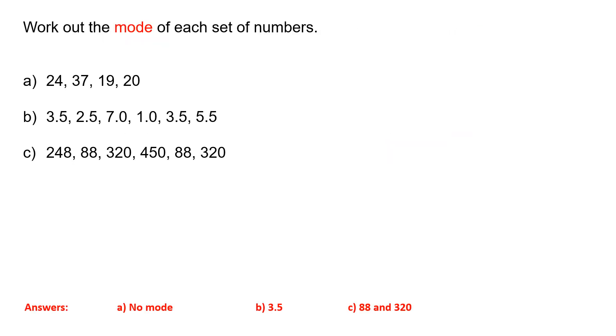Now I've put another three sets of numbers here for us to work with. I'm going to do the first set with you, but I'll leave B and C for you to do yourself. The answers are all at the bottom. Remember, we're working out the mode here, so it's the number that's there the most. And when we look at this set of numbers for A, we've got 24, 37, 19, and 20. There is no number that's there more than the most. So in this case, there is no mode.